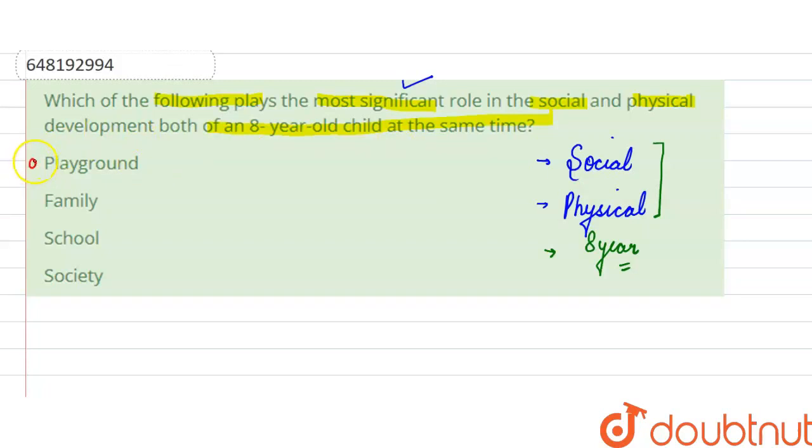So we see here the options: playground, family, school, or society. If you are clear on the reasoning, then the answer would be school. Thank you.